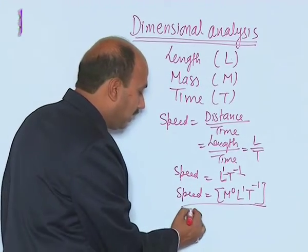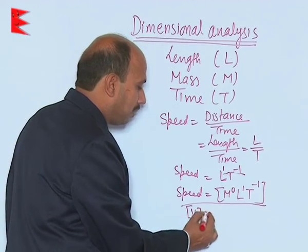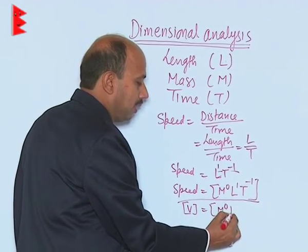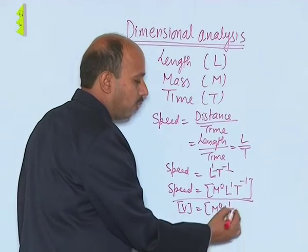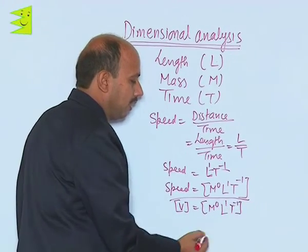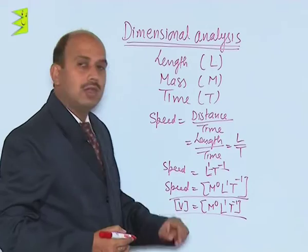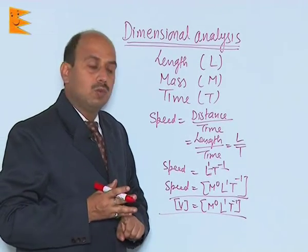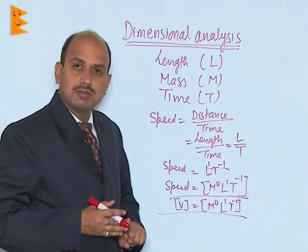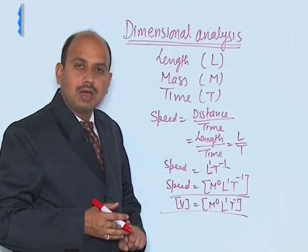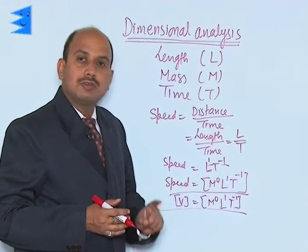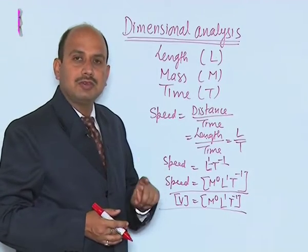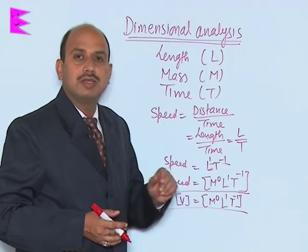If you equate it with the dimension — writing V equals M⁰ L¹ T⁻¹ — this is known as a dimensional equation. So we have seen what dimensions are, what a dimensional formula is, and what a dimensional equation is. Now we will find the dimensional formula of different quantities.